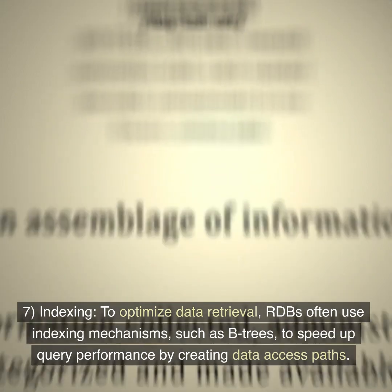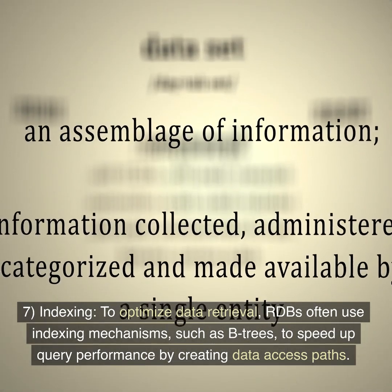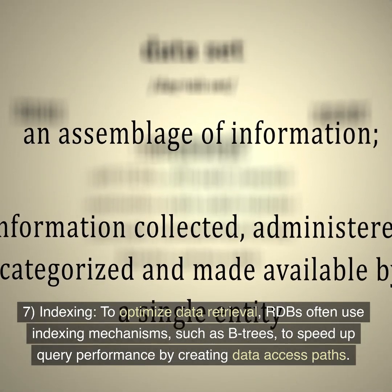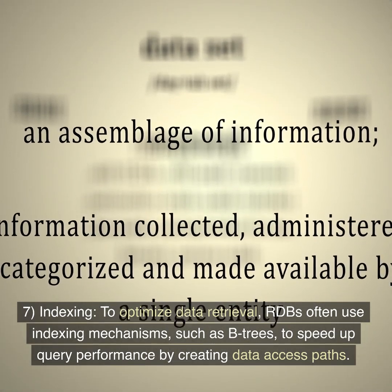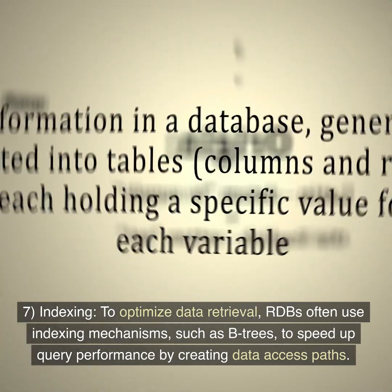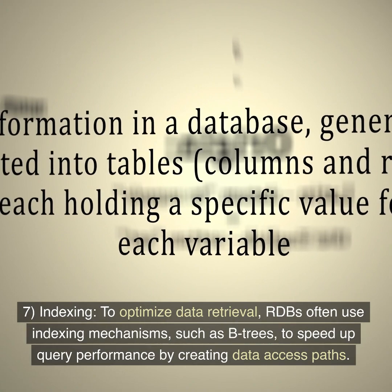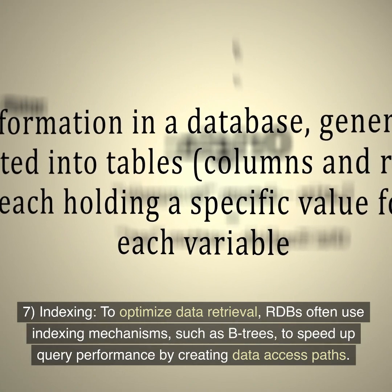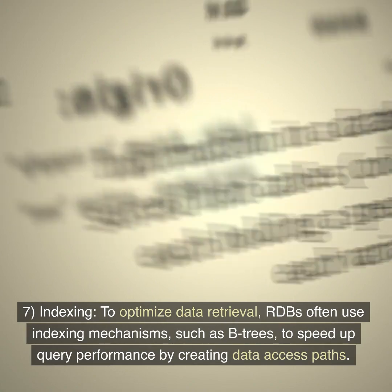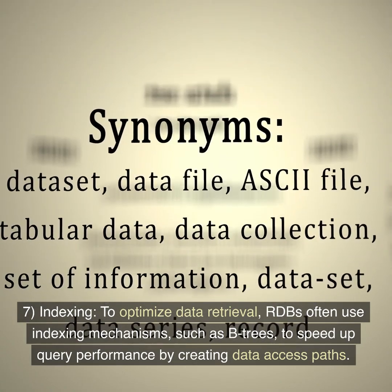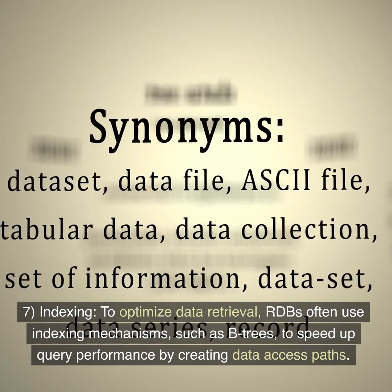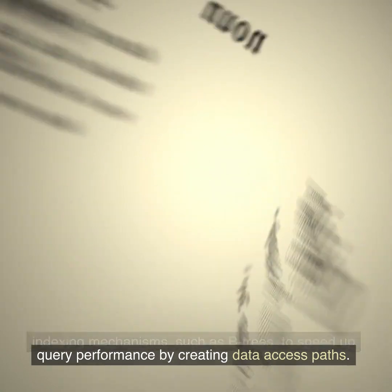7. Indexing. To optimize data retrieval, RDBs often use indexing mechanisms, such as B-trees, to speed up query performance by creating data access paths.